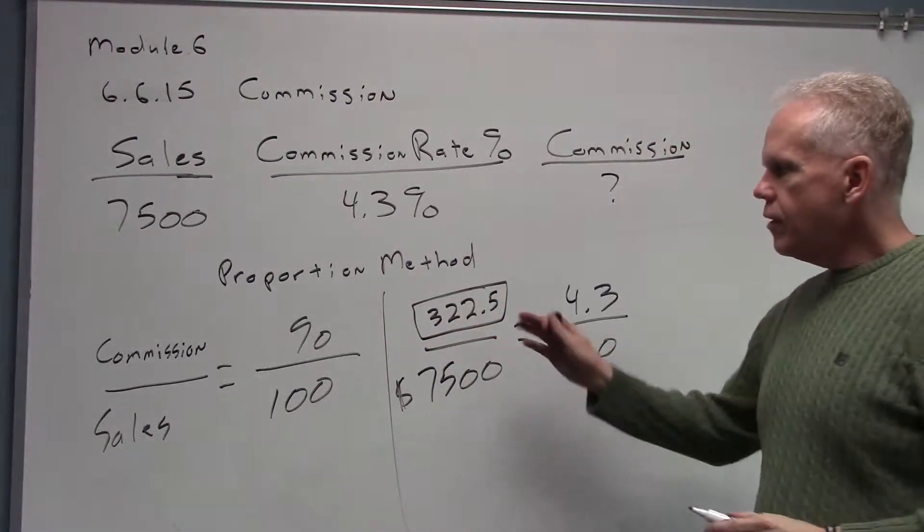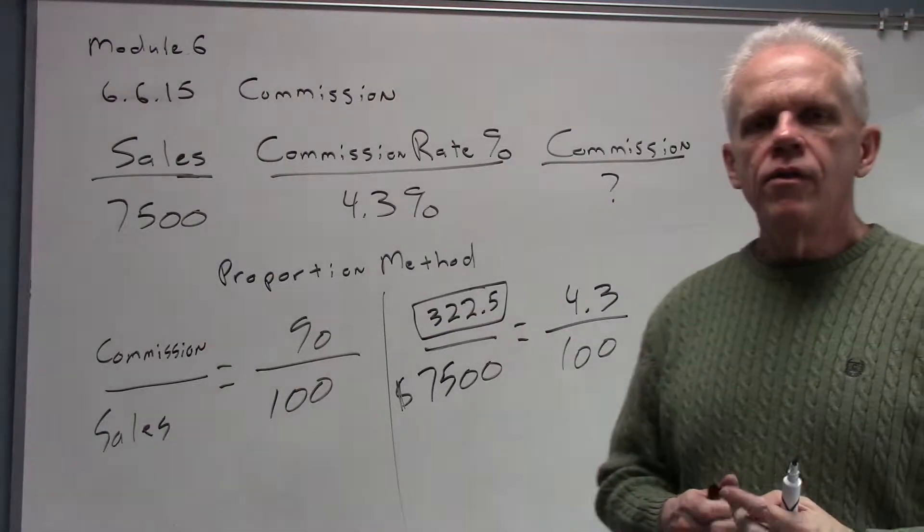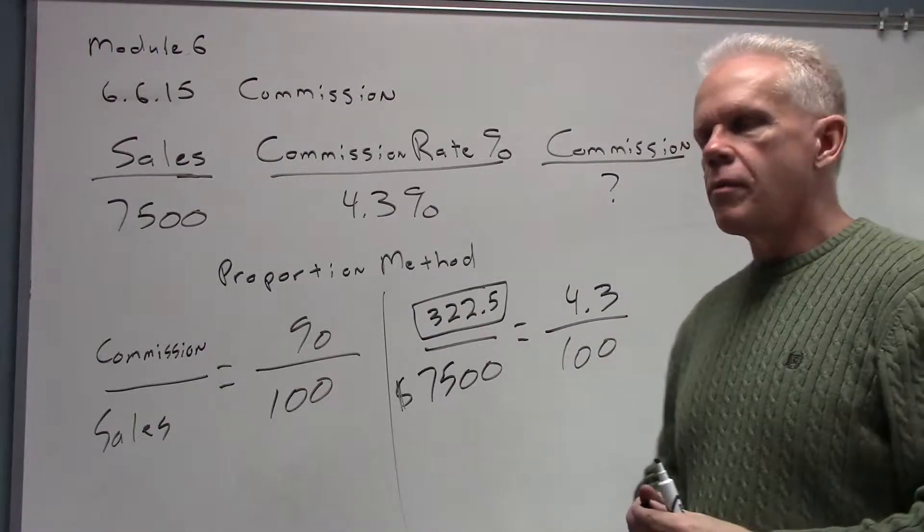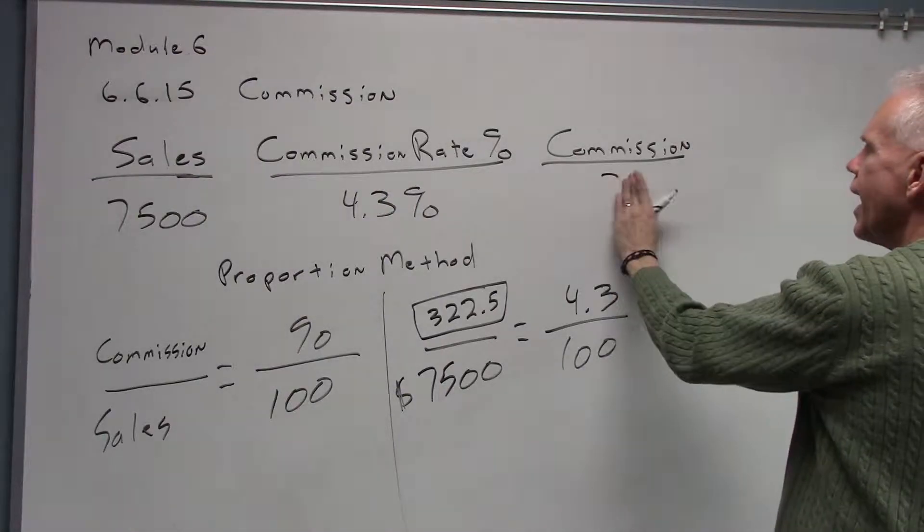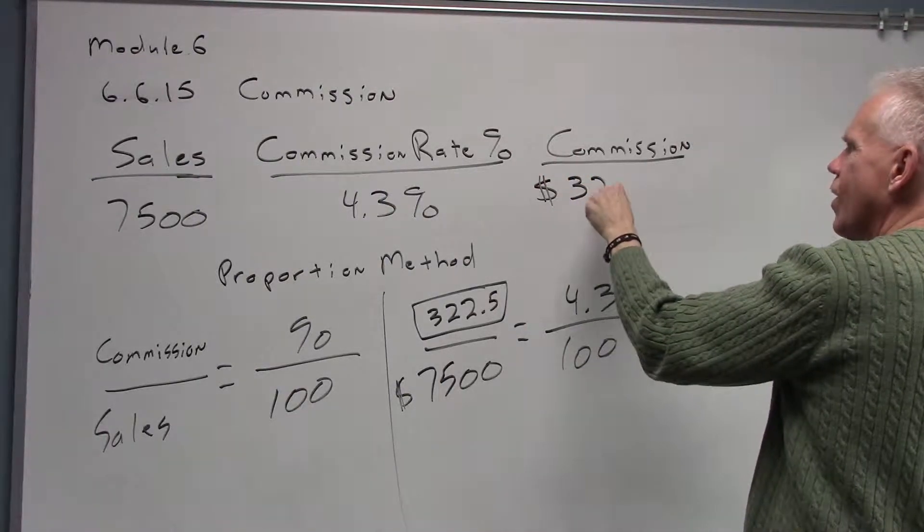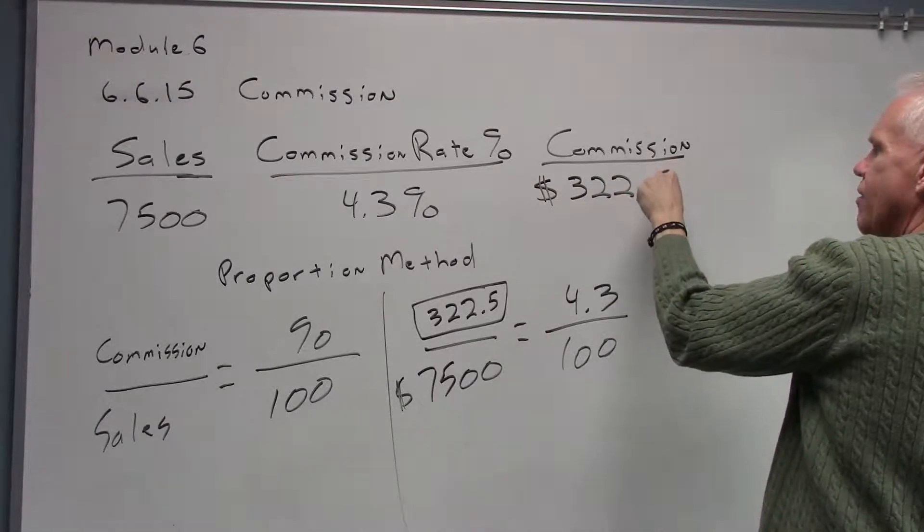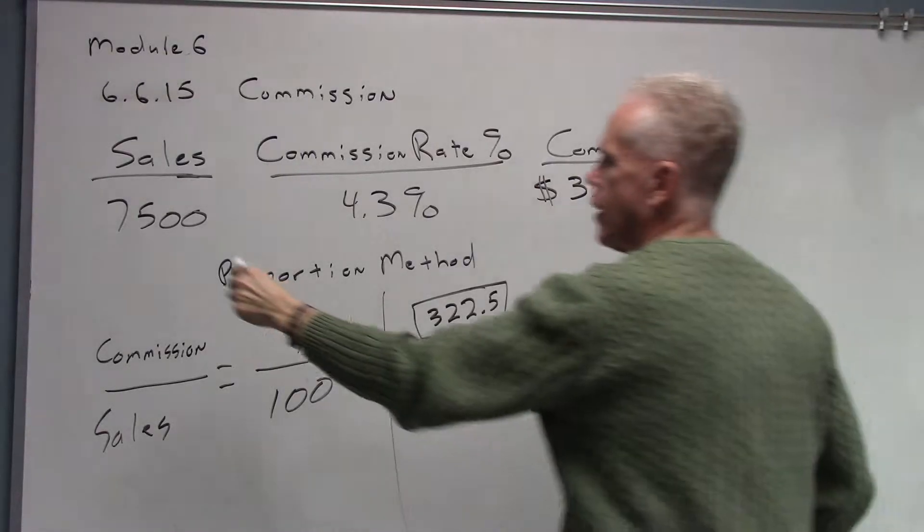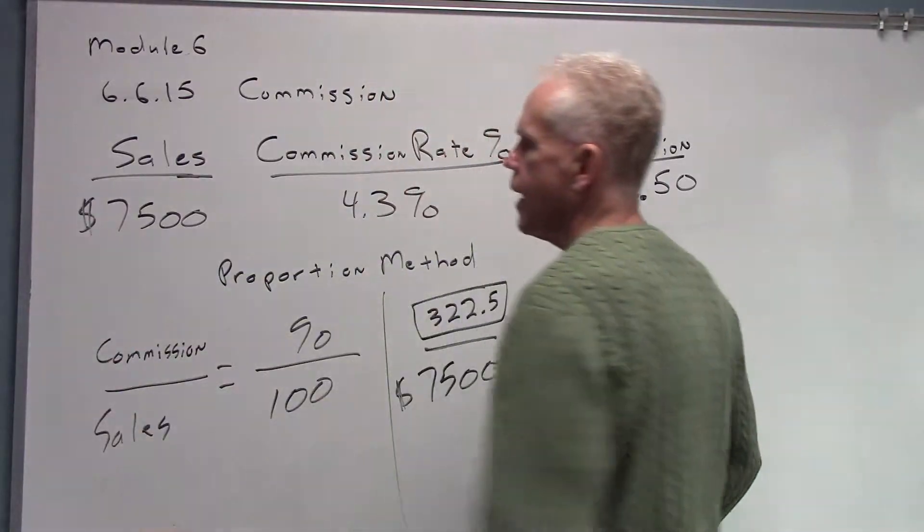Now remember, this 322.5 is actually money. It's a dollar amount. As a real dollar amount, this is $322.50. That was $7,500 right there.